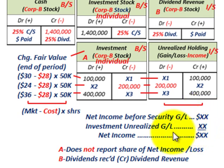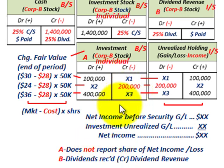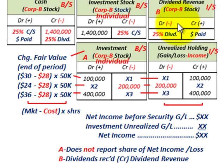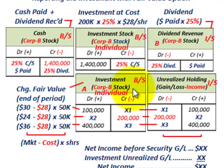You do not report the share of net income or loss of Corporation B when using the fair value option — all you're doing is recording fair value changes in your investment account. Dividends received go into a dividend revenue account, and any dividends received from the equity investment go directly into dividend revenue on the income statement — different from the equity method.